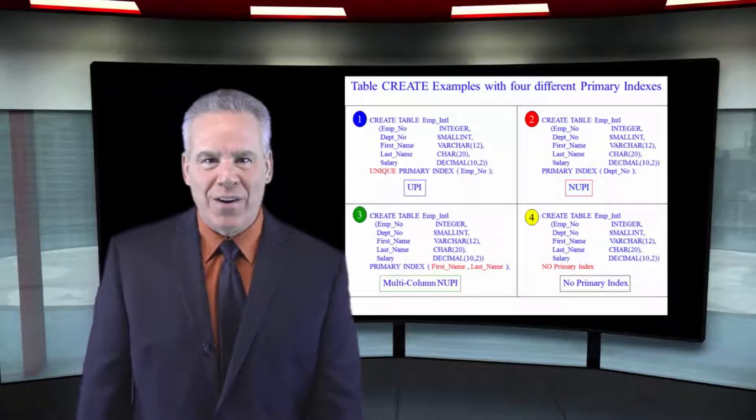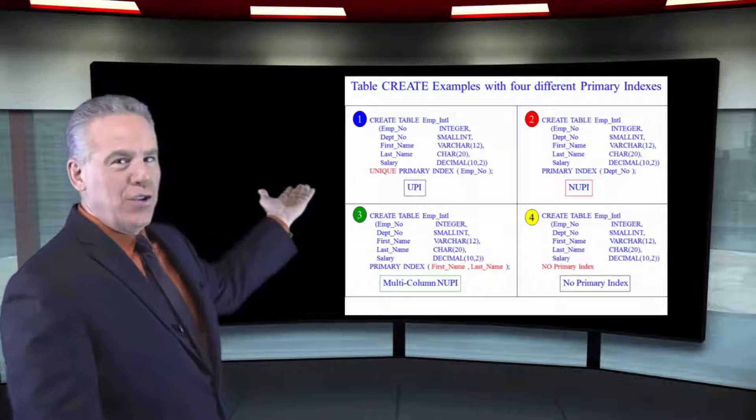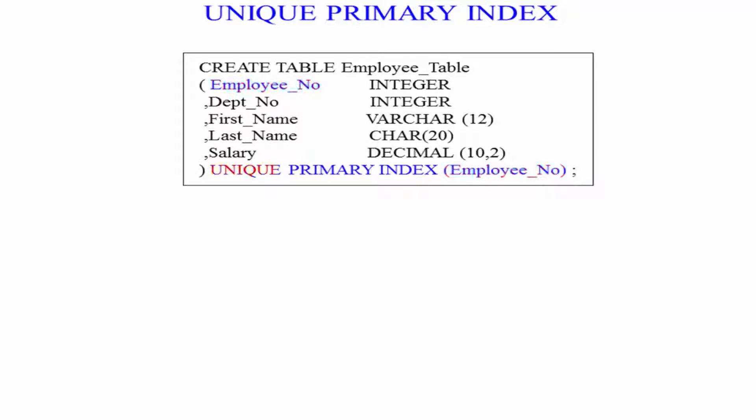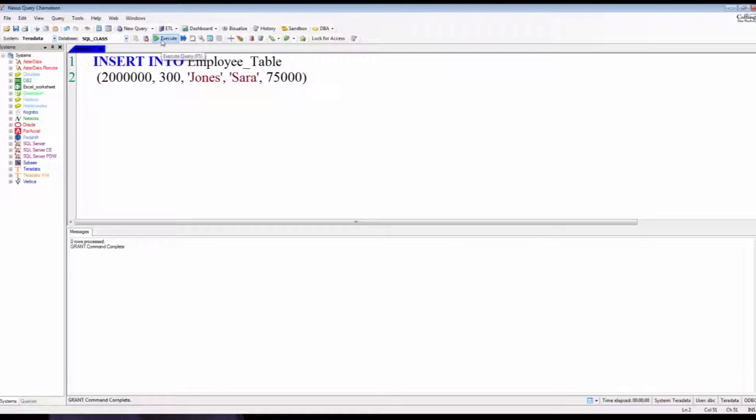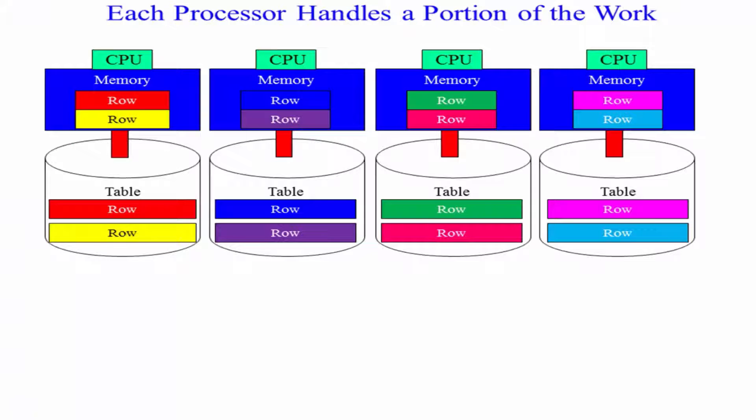I've got your choices right here. Our first example has a unique primary index. We can't put a duplicate employee number in that table. It kicks it out. Data's spread perfectly even.